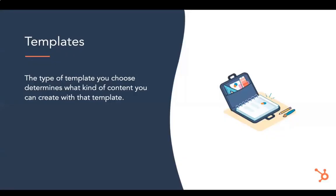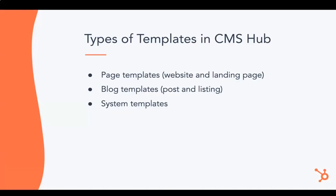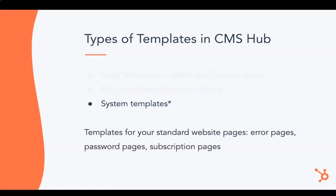The type of template you choose determines the type of content you can create. Templates are suited for different types of content: page templates for website and landing pages, blog templates for blog posts and blog listing pages, and system templates for standard site pages like error pages and password pages. System templates are a slightly different type and won't be covered in this workshop, but there's a link in the resources if you want to learn more.